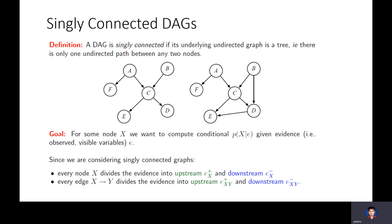We'll talk about a message-passing-like algorithm where computation flows along this tree. After it moves across the entire tree, you get the answer to your query — the probability value. You have completed your inference.